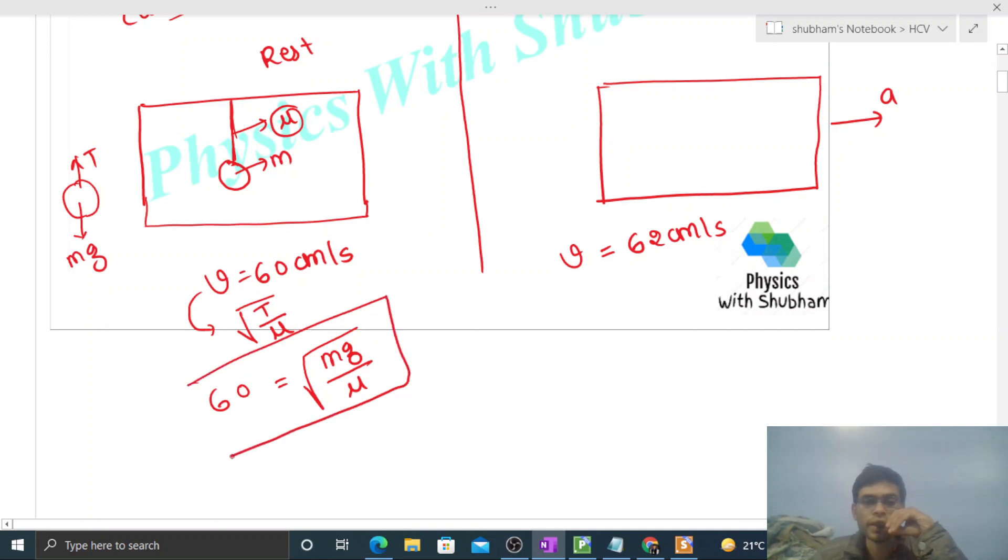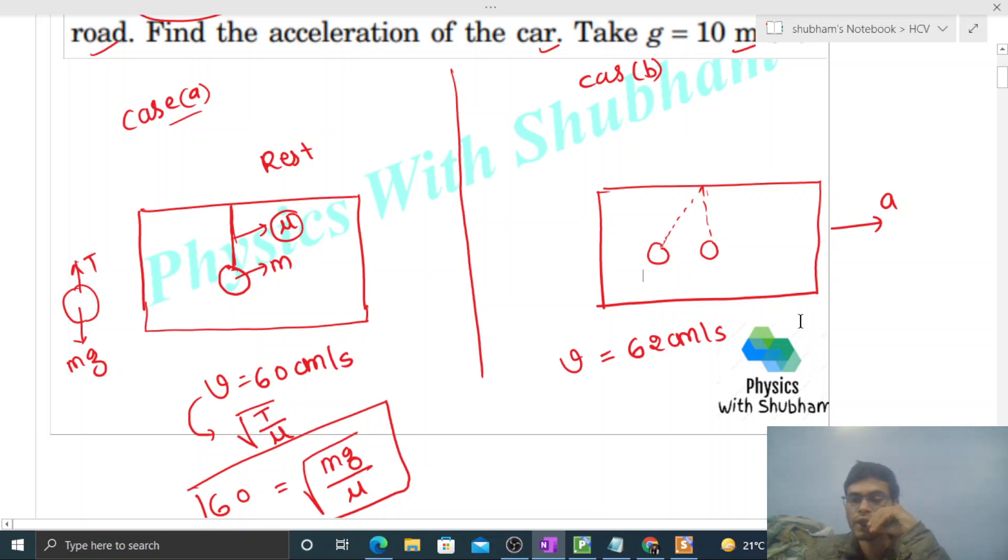This is equation 1. Now second case is that here the ball will not be vertical rather slightly tilted, something like this. We discussed this in Newton's laws of motion in detail. Why will it be tilted?